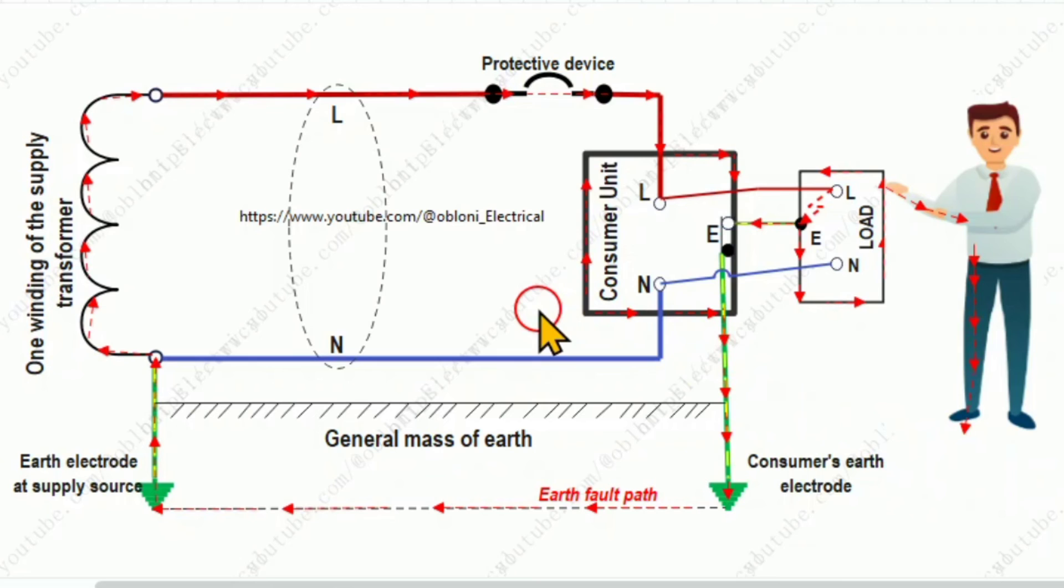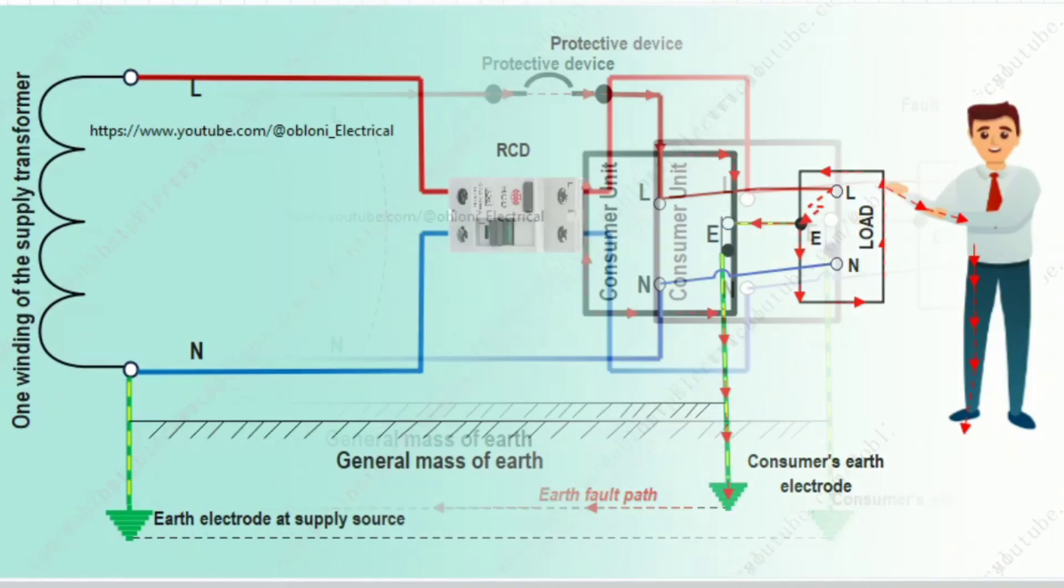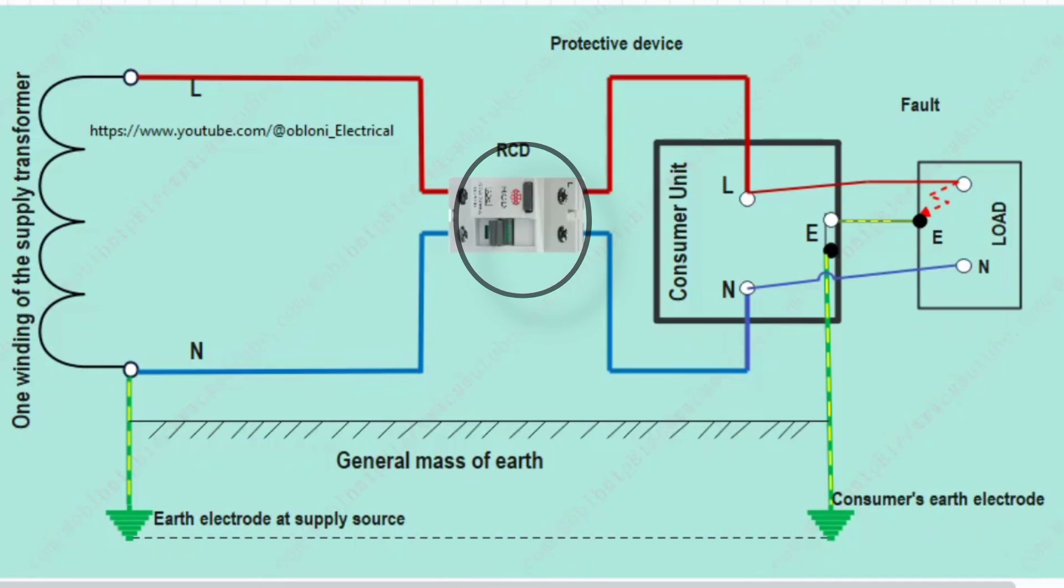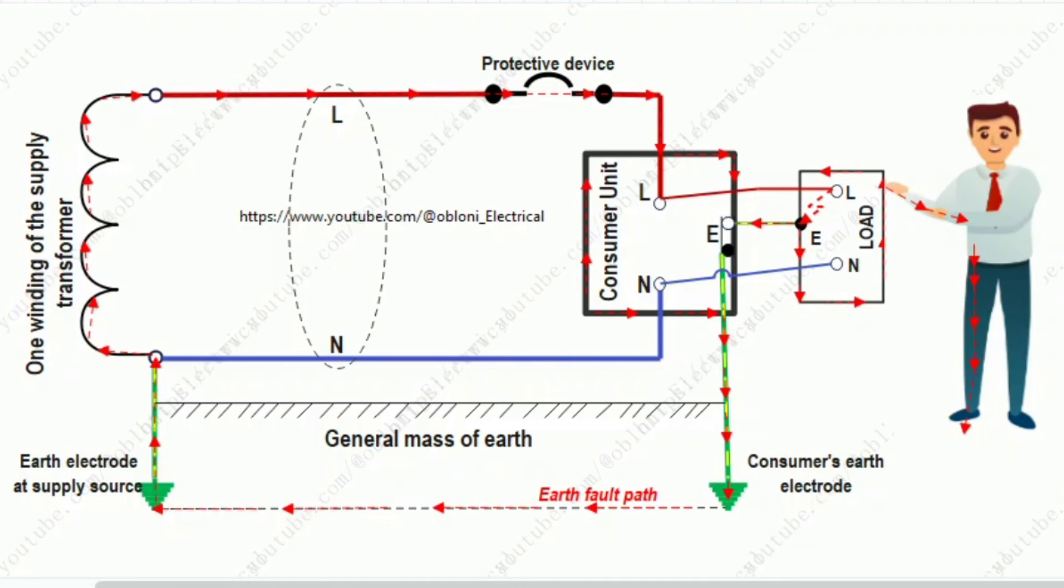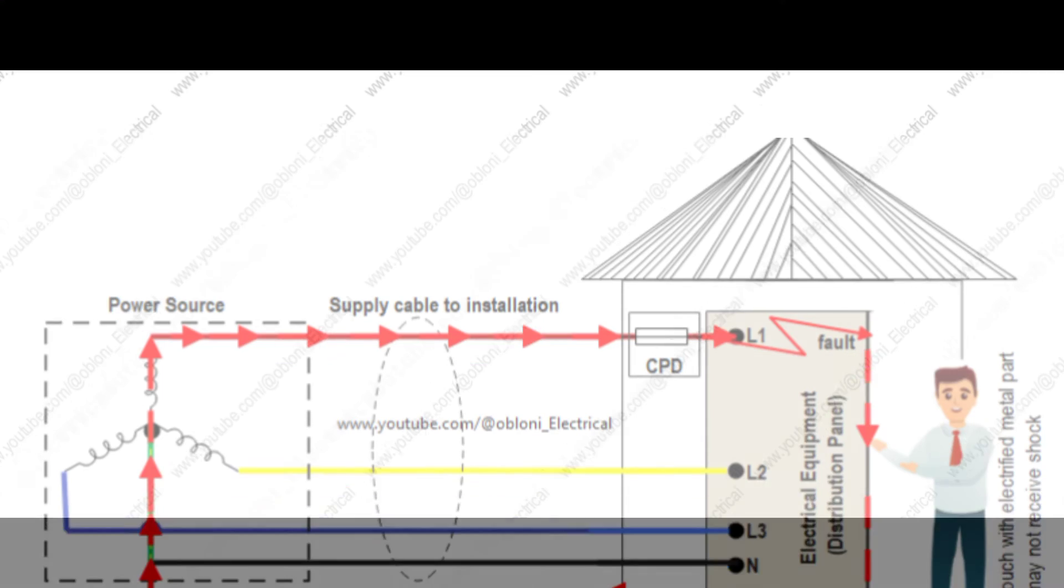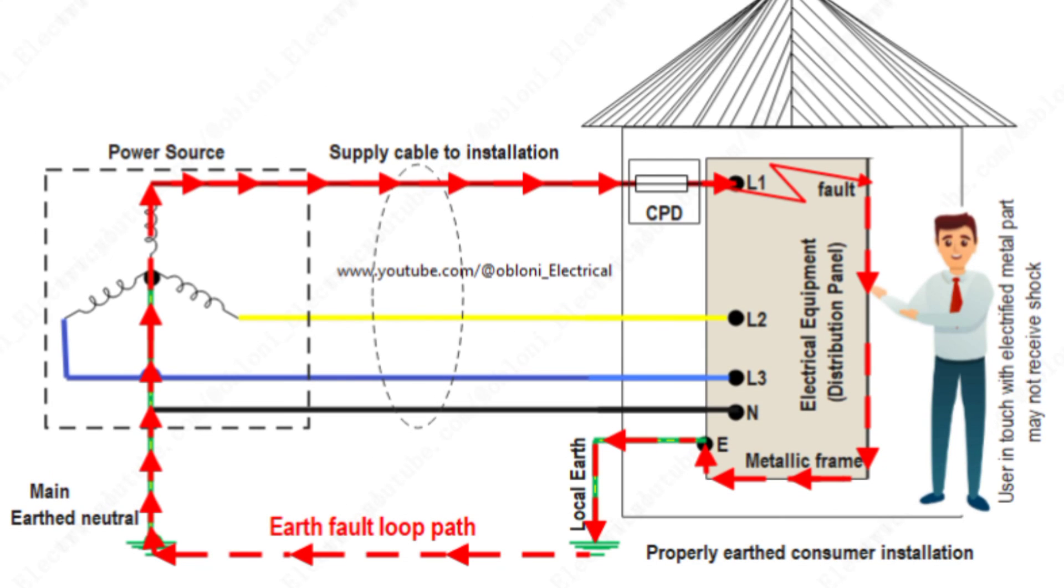I must say that in many jurisdictions, it is actually mandatory to use RCDs in a TT system. So, in conclusion, generally, the impedance of the earth fault loop path in a TT system may not be low enough. Nevertheless, it is possible that if you have a good earthing system that has a very low impedance path, a protective device can operate in the event of a short circuit between live and earth in a TT system.